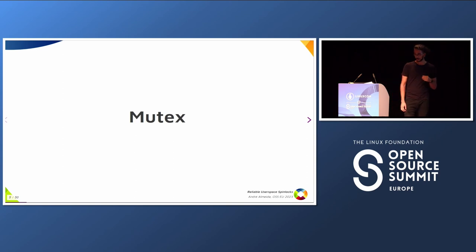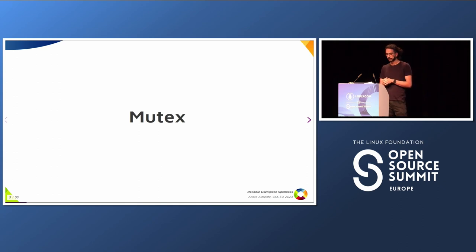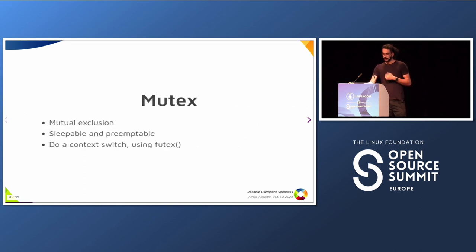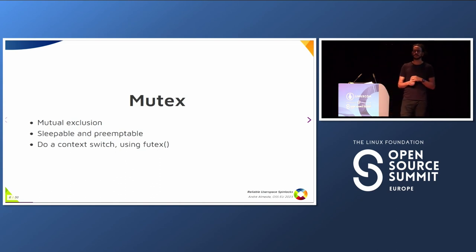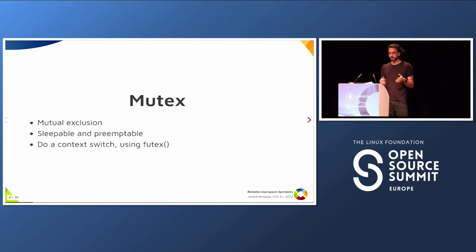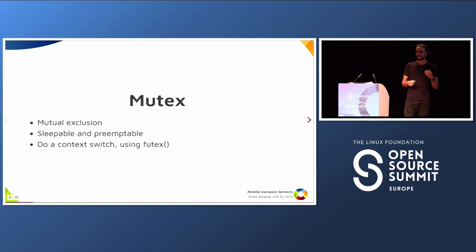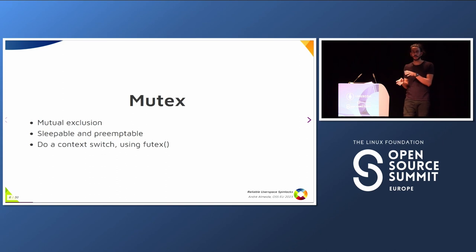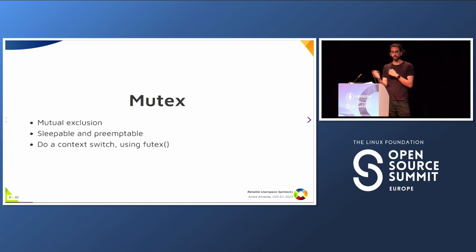I will start explaining a little bit about mutexes, because I think it's the most simple locking primitive and the one most used in user space. Mutexes mean mutual exclusion — just one thread at a time will have access to the critical section. On Linux, that means the thread waiting for the lock is sleepable and preemptible. If you are waiting for a lock, you will sleep. The thread gives back to the kernel that time slice so the kernel can schedule your CPU to do something else. On Linux, we use futex for that — we do a context switch and give the time to the kernel.